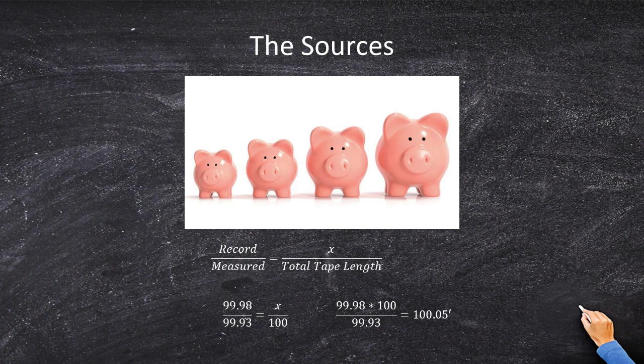So record partial multiplied by record total divided by the measured partial. And what that is going to yield is the true value of your full 100 foot tape.